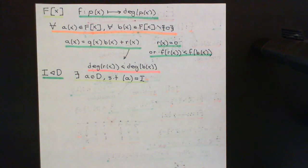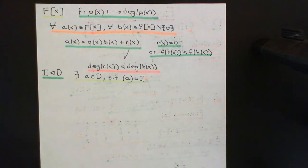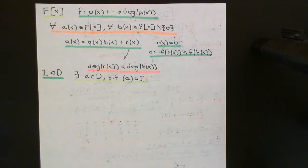If you've seen the proof that all ideals in the integers are principal ideals, we're going to follow basically the exact same strategy. We're just now going to generalise it and apply it to an arbitrary Euclidean domain.